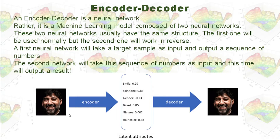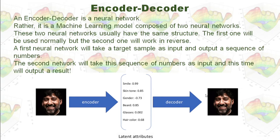And you can see, these are our input data. Here is a gentleman's face. And in the middle is our latent space. In the latent space, we are going to put the latent attributes — all the features. And then we will have a decoder here. The decoder, the second network, will take this sequence of numbers as input and output a result. So we are going to use those features to reconstruct this gentleman's face.